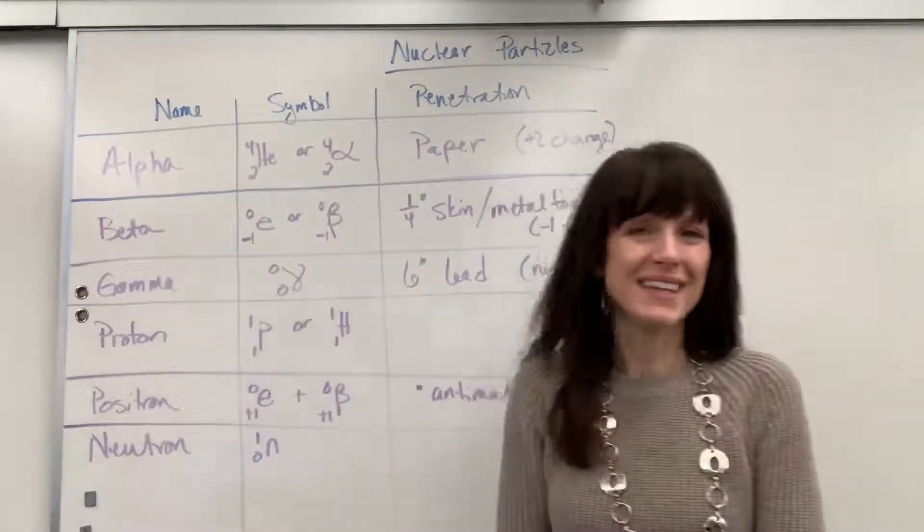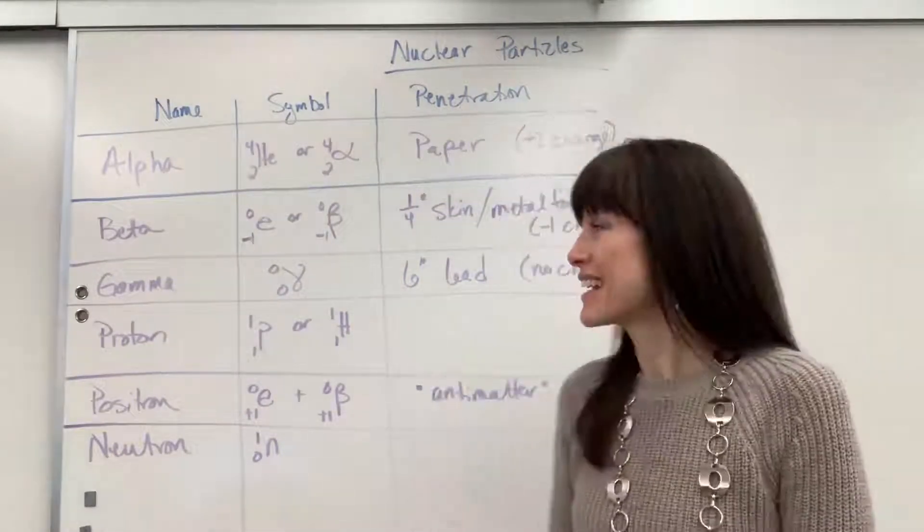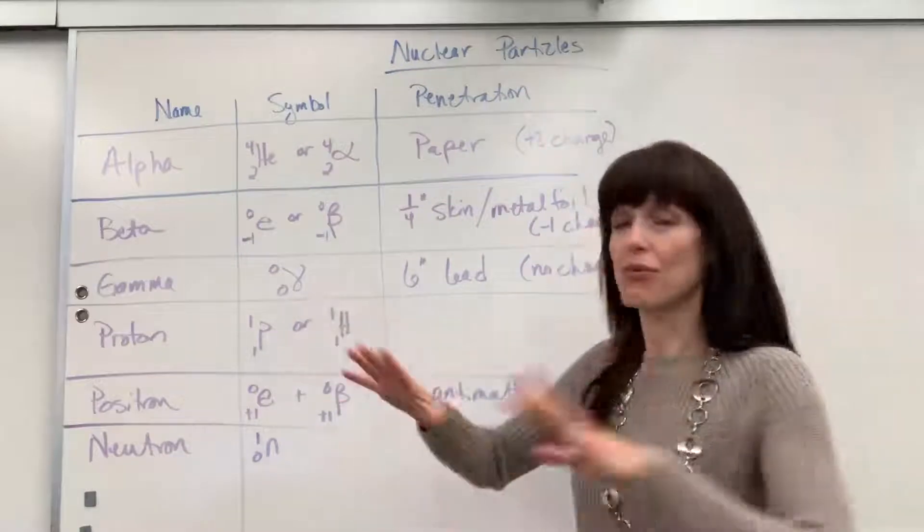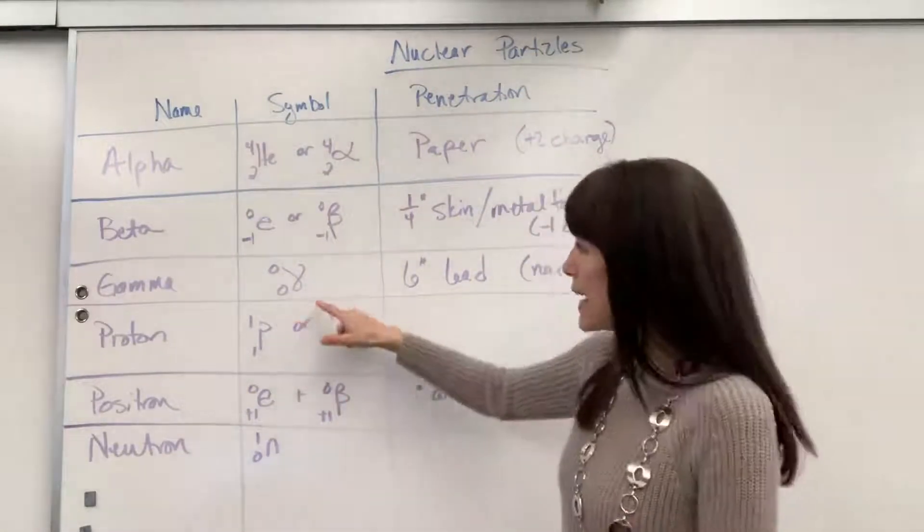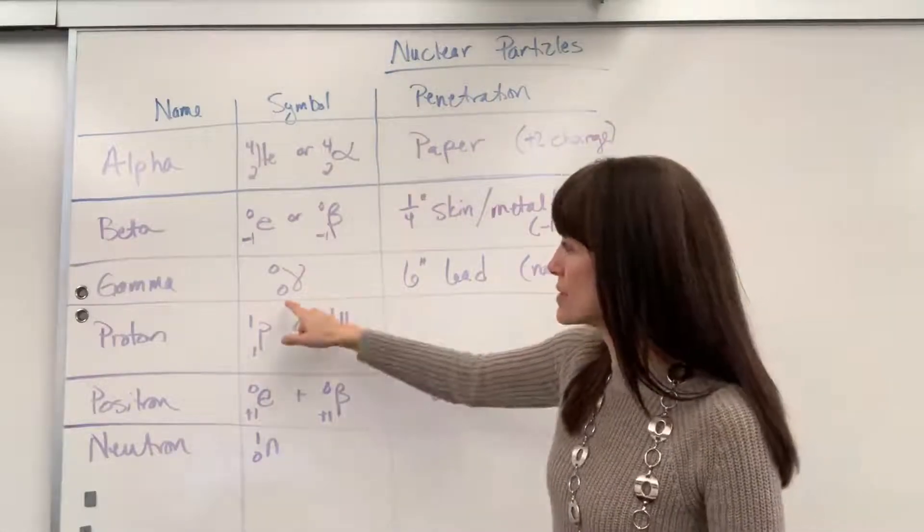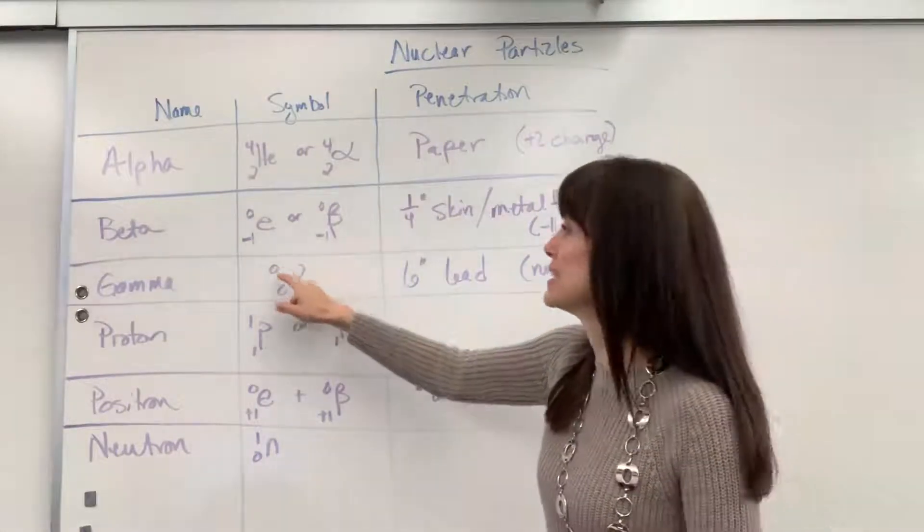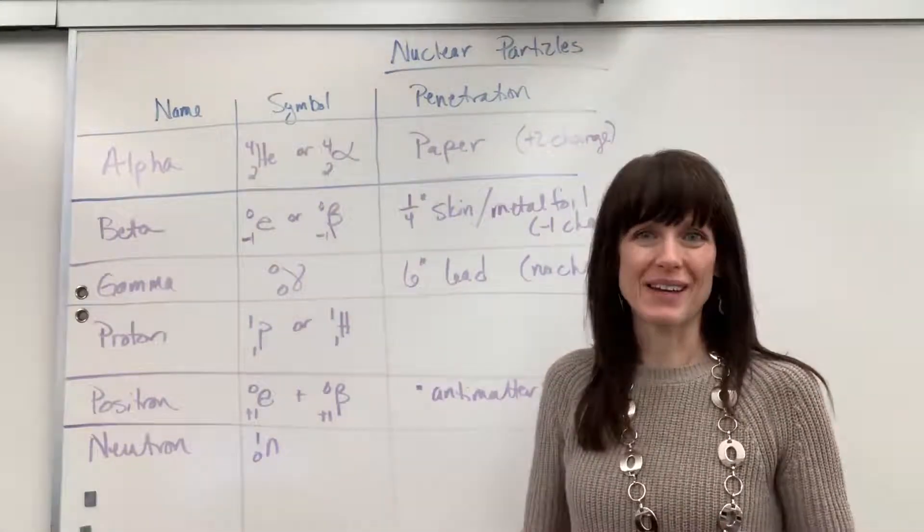Okay, now gamma radiation. This is crazy cool. Gamma radiation is pure energy. Okay, we only have one symbol to represent it. It's from the Greek alphabet. There's your gamma right there. And notice zero for the atomic number and zero for the mass number. Pure energy.